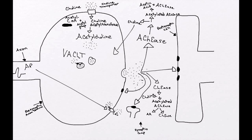Once acetylcholine is broken down, not only do we get functional cholinesterase, but the choline can be transported back into the presynaptic terminal, where it is retransported into the vesicles and utilized again. That's the basic foundation for what we're going to talk about.